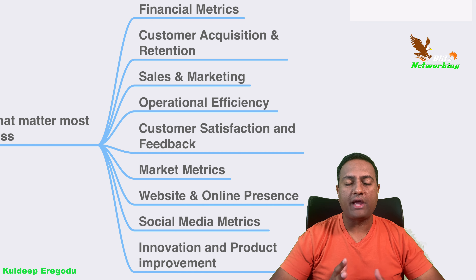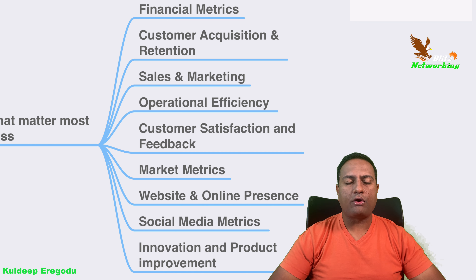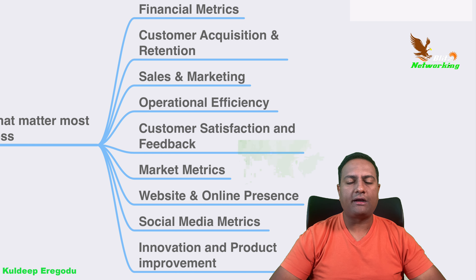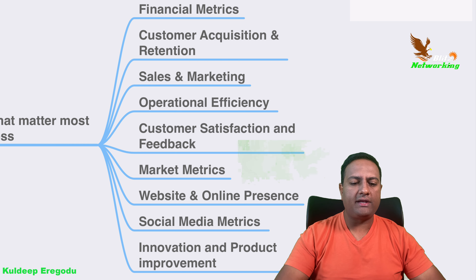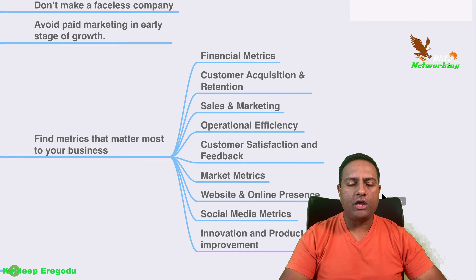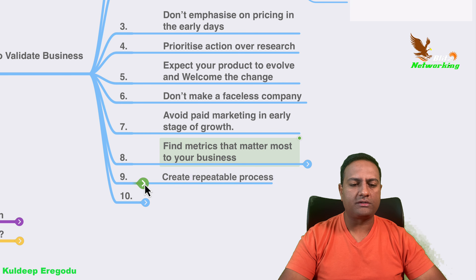Continuing with metrics: track your market matrix — find out how the market is performing and what new products are competing with you. Maintain your website and online presence, which is one of the most organic ways to market yourself, on any channel or social media. Social media metrics also matter. And finally, innovation and product improvement — constantly innovate and keep improving your products.